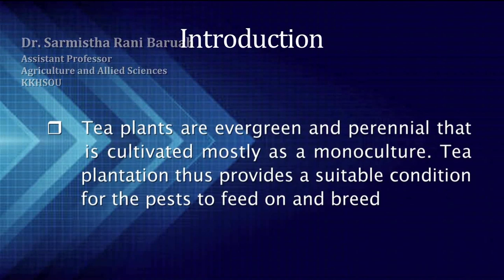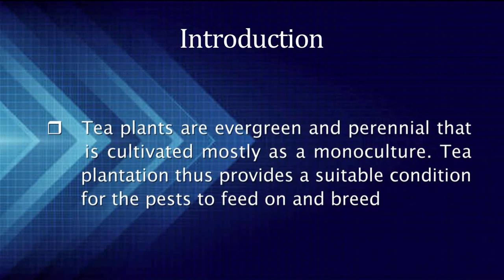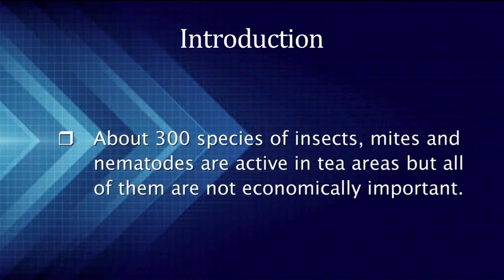As we all know, tea plants are evergreen and perennial, cultivated mostly as a monoculture. Tea plantation thus provides a suitable condition for the pests to feed and to breed. The plantation supplies plenty of food for the pests throughout the year, and thus many species of insects, mites and nematodes infest tea plants and cause damage. About 300 species of insects, mites and nematodes are active in tea areas.